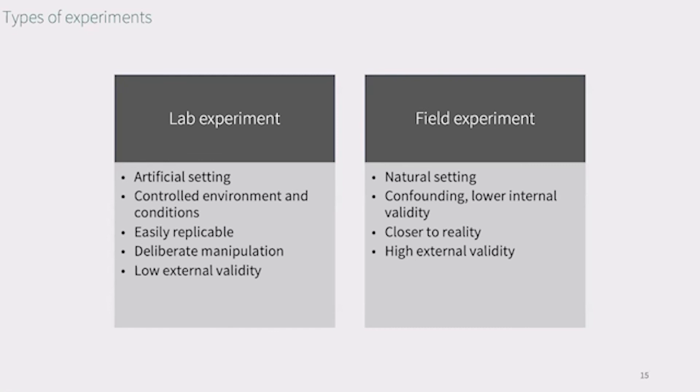This means that because the situation is artificial and far from reality, it is questionable how its results can be generalized to other than the specifically designed setting. Field experiments, on the other hand, are placed in the natural setting, closer to reality and therefore have higher external validity. The biggest issue with field experiments is the uncontrollable threat of confounding, which dramatically lowers the internal validity, which is the trustworthiness of the established cause and effect relationship.